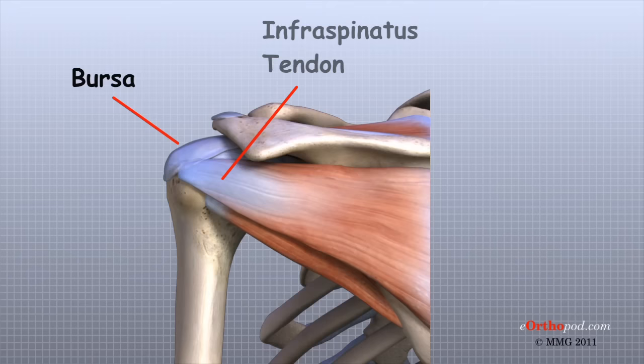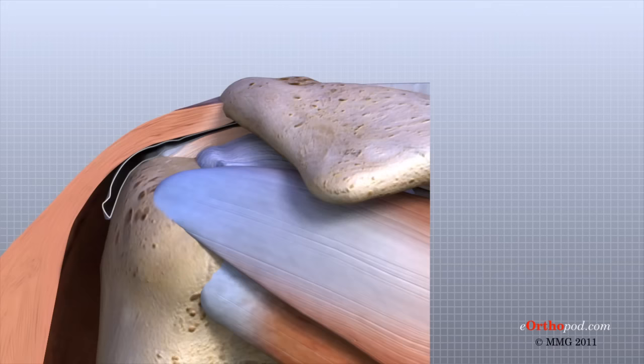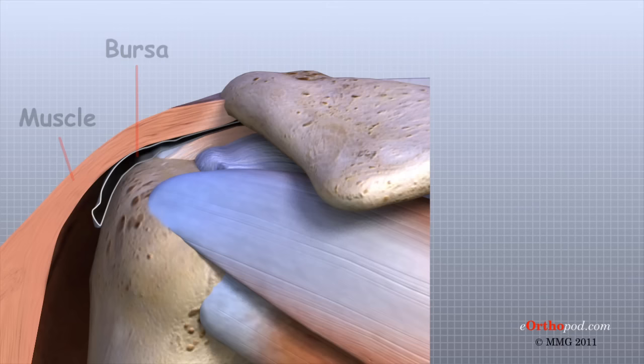Sandwiched between the rotator cuff tendons and the deltoid muscle are structures known as bursa. Bursa are everywhere in the body. They are found wherever two body parts move against one another and there is no joint to reduce the friction. A bursa is simply a watertight sac between two moving surfaces that contains a small amount of lubricating fluid.